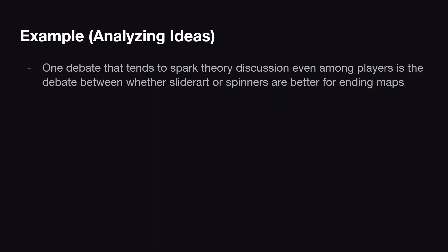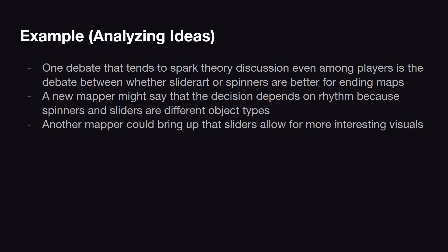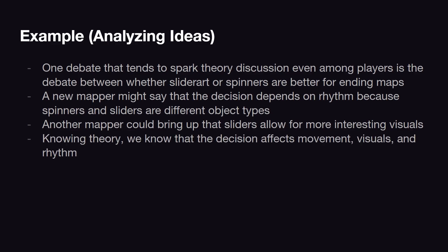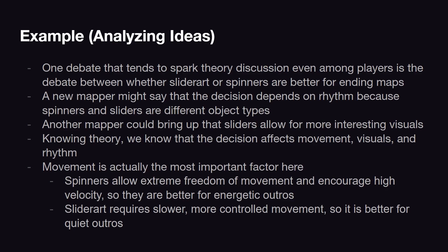A debate I've heard a lot is whether slider art or spinners are better for ending maps. One mapper might say this is just a rhythm discussion because spinners and sliders are two different object types. Another mapper might say that with slider art you can make more interesting visuals. With theory, we know that this decision affects all three aspects — visuals, movement, and rhythm. Movement is actually the most important here. With a spinner, you're going to be moving really fast with very little restriction on how the cursor moves. With a slider, you're going to be moving a lot slower and movement is highly controlled. So these are pretty much direct opposites. Spinners are better for intense outros because of the faster, more free movement, while slider art is better for quiet ones because of the slower, more controlled movement. Using theory, you can weigh decisions like this.